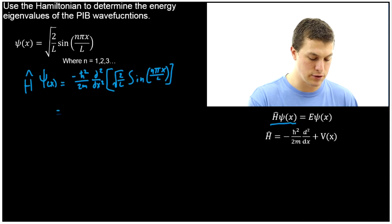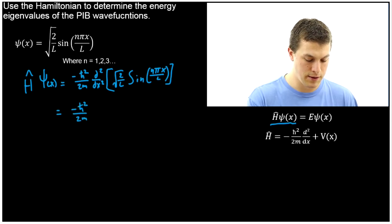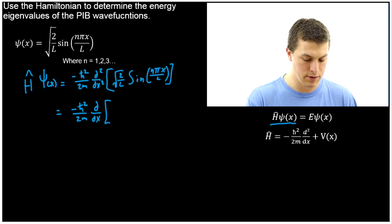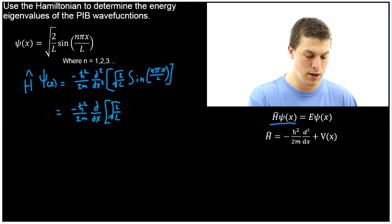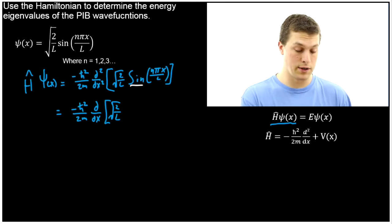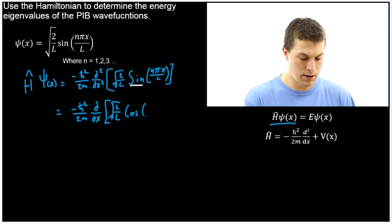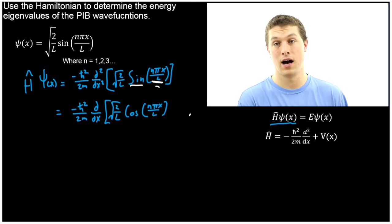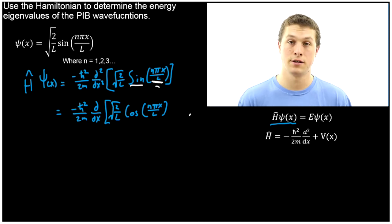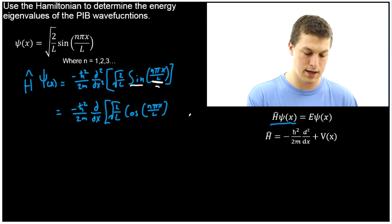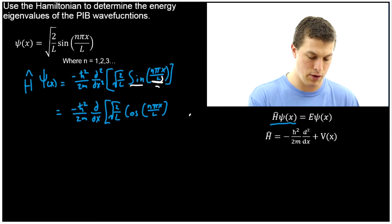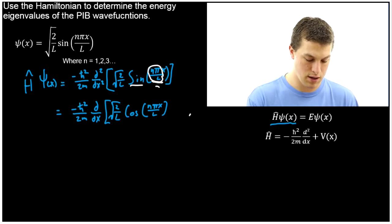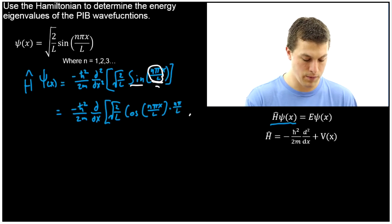Let's go ahead and stepwise take the derivative. First, the first derivative: negative h-bar squared over 2m, now with one derivative left. Our constant up front, used for normalization, sticks around. The derivative of sine is cosine, so we get cosine of nπx over L. Now, nπx over L is really just a constant times X. When we apply the chain rule, we take the derivative of what's inside our sine. Whenever you take the derivative of a constant times X, you just get the constant. In this case, that constant is nπ over L. So we get a factor of nπ over L when we apply our chain rule.